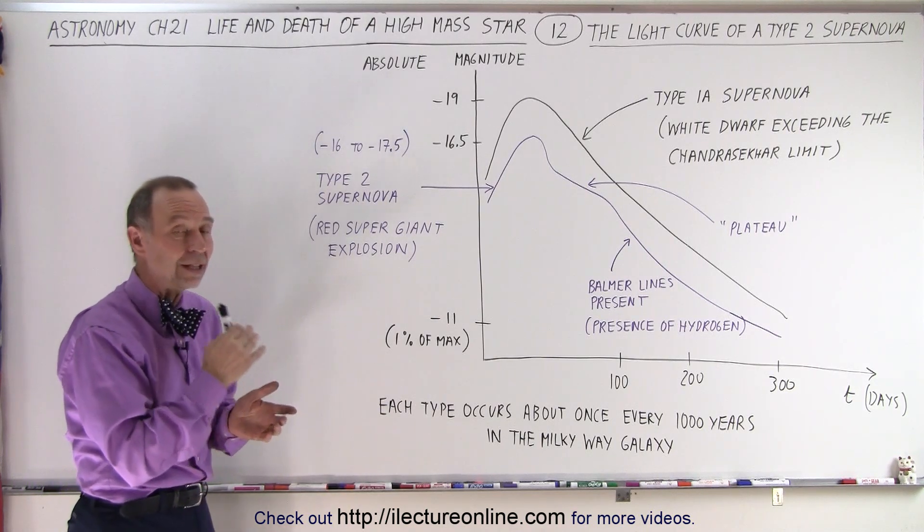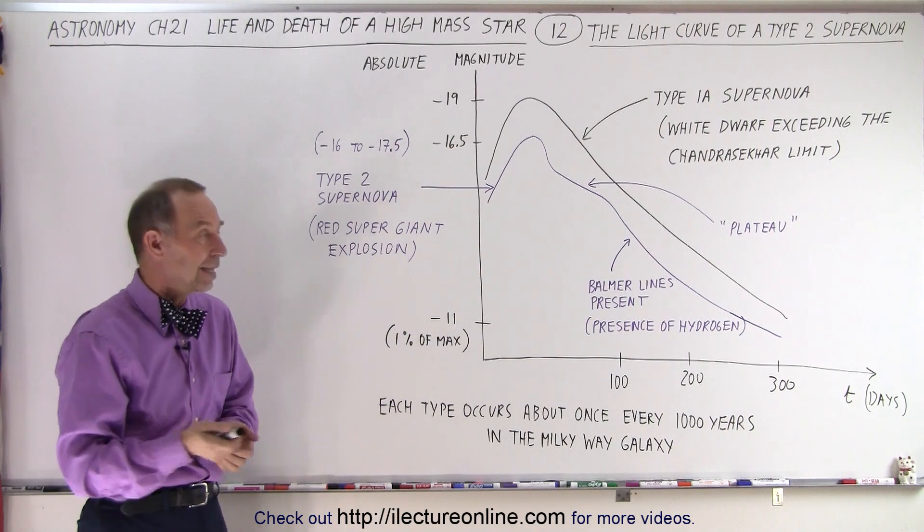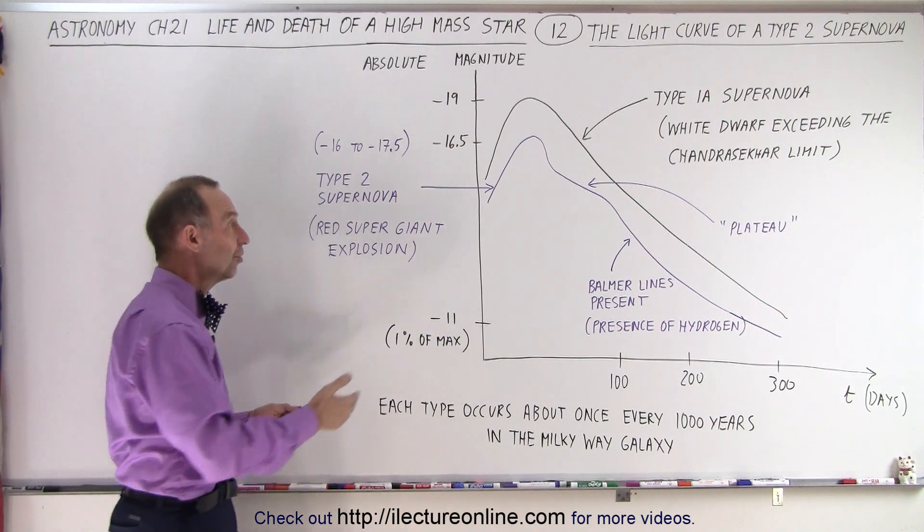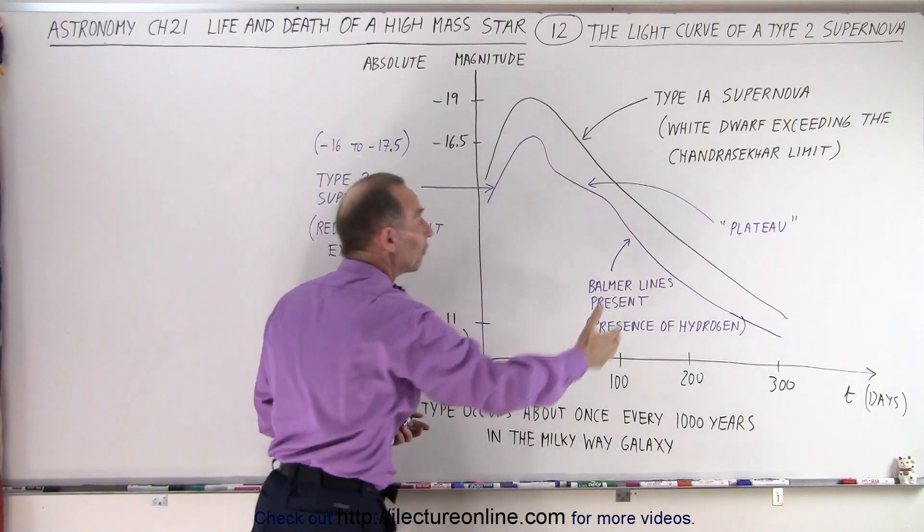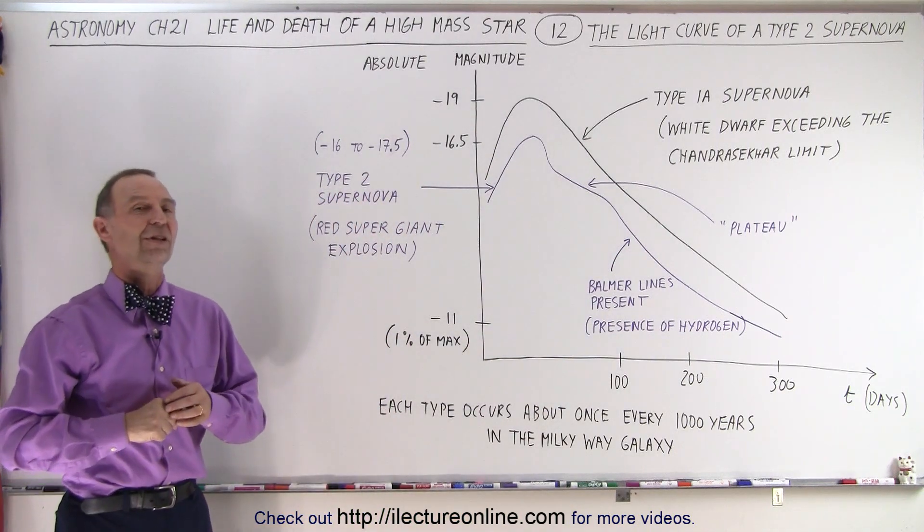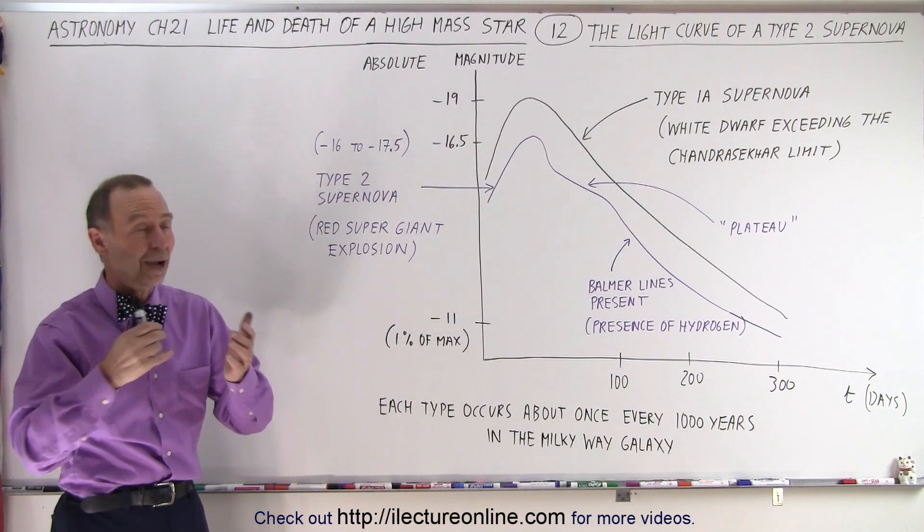So there you go that's how you tell the difference between a Type 1a and a Type 2 supernova. This is the unique light curve that we see over a period of about 300 days after the explosion and that is how it's done.